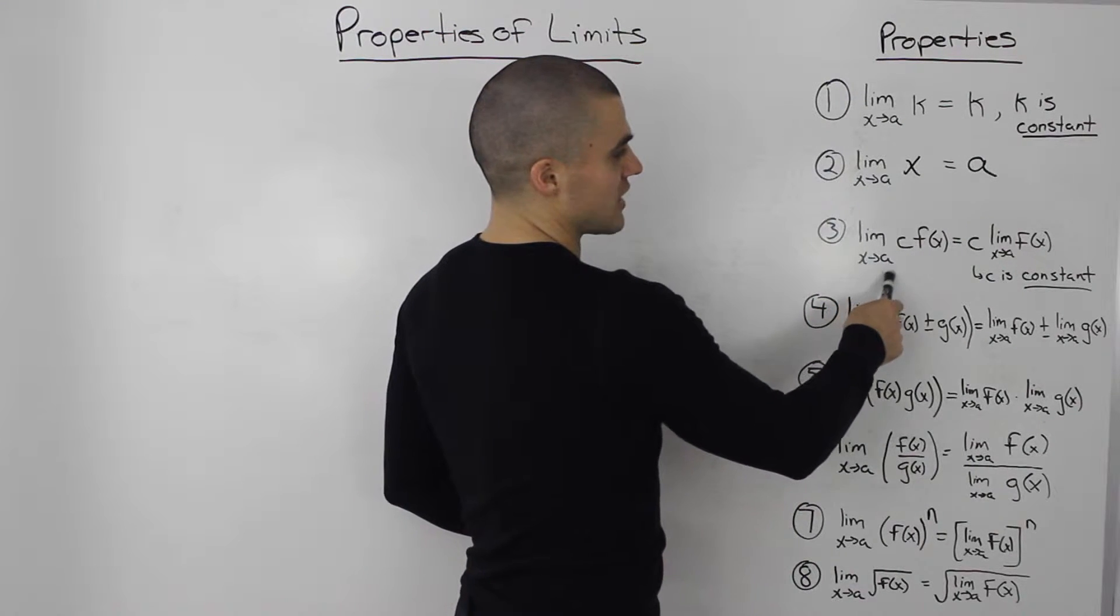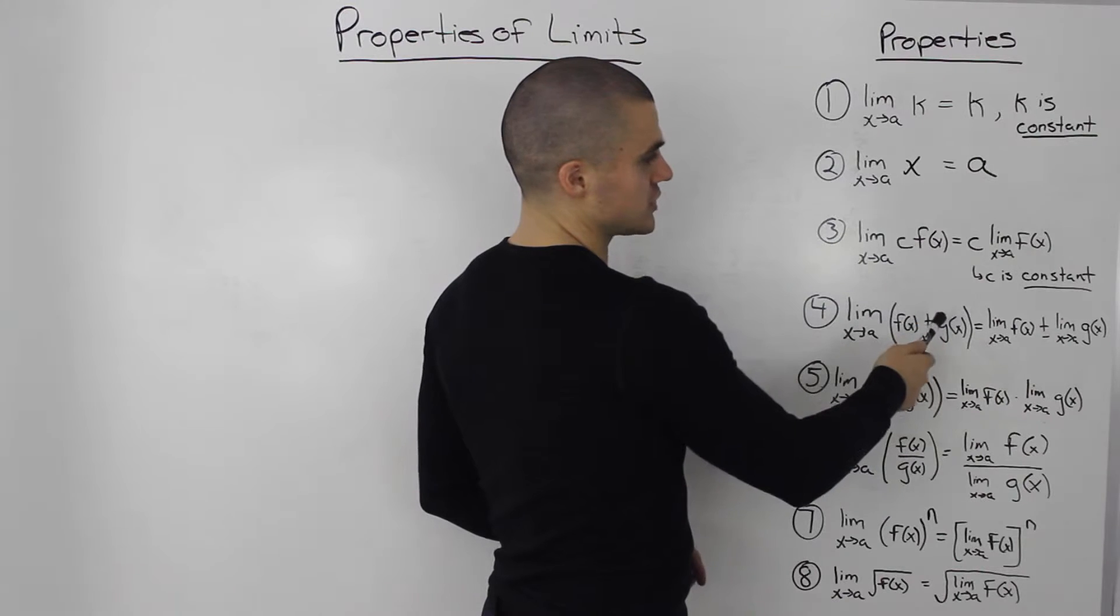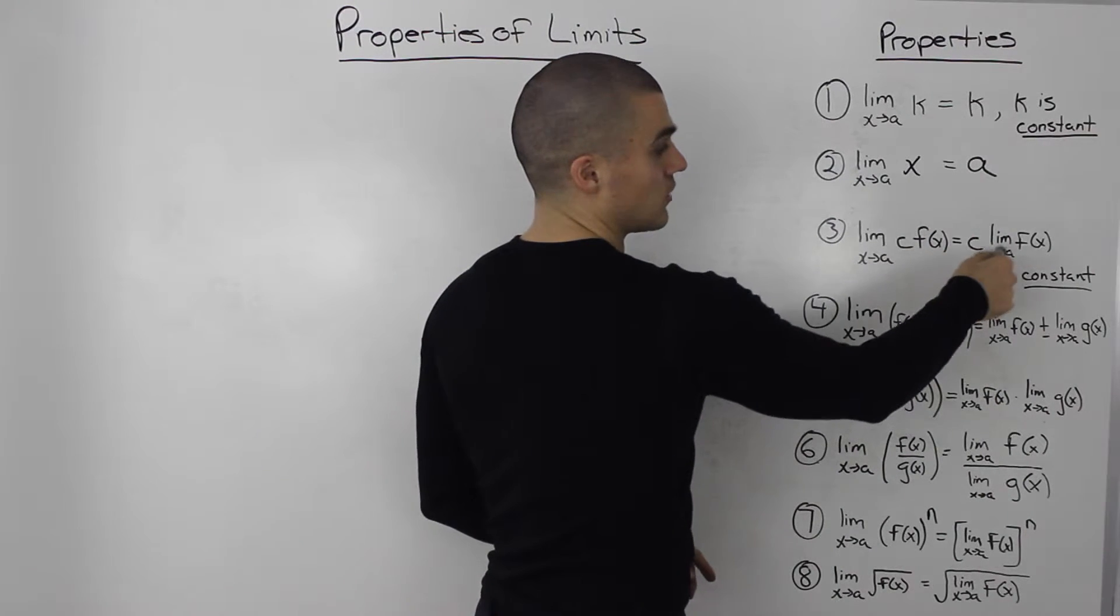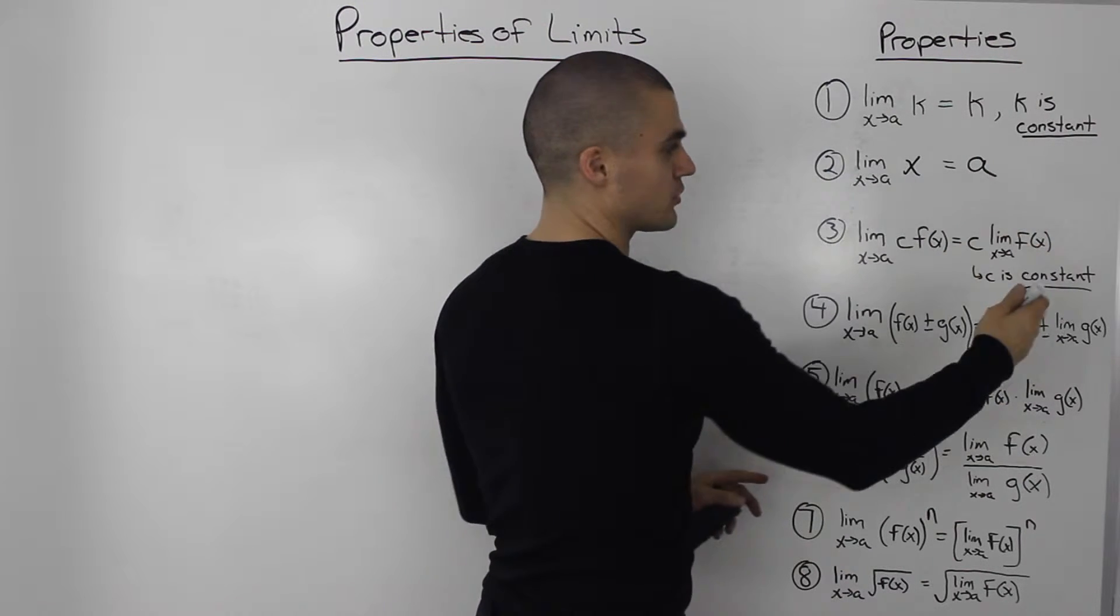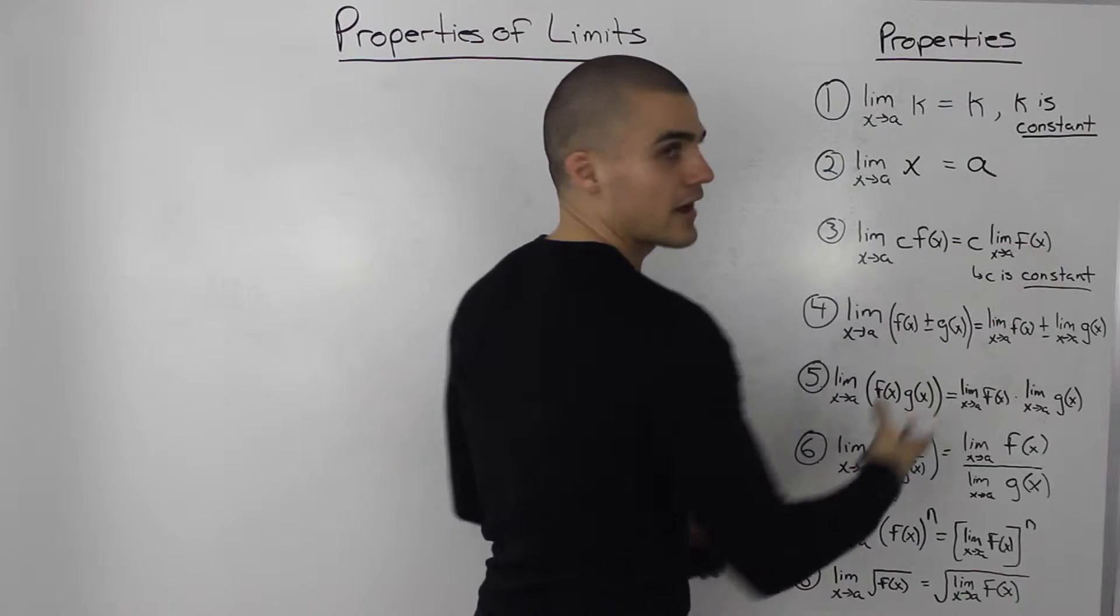The limit as x approaches a of a constant times the function. You could take the constant out, take the limit of the function separately and then just multiply the constant by that limit.